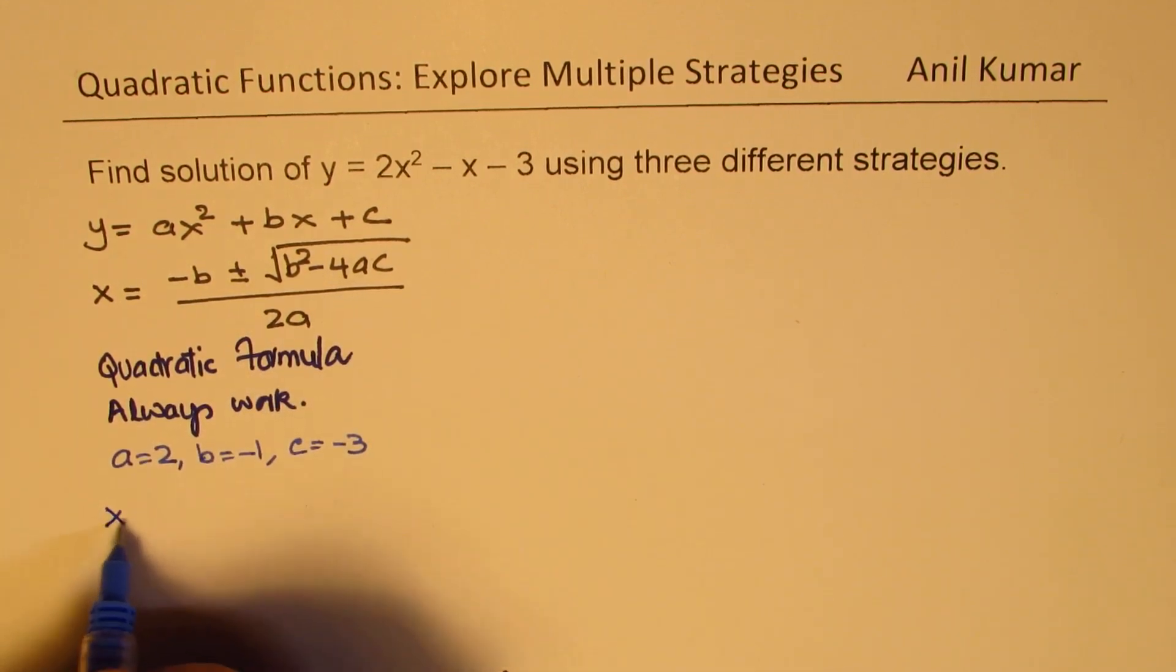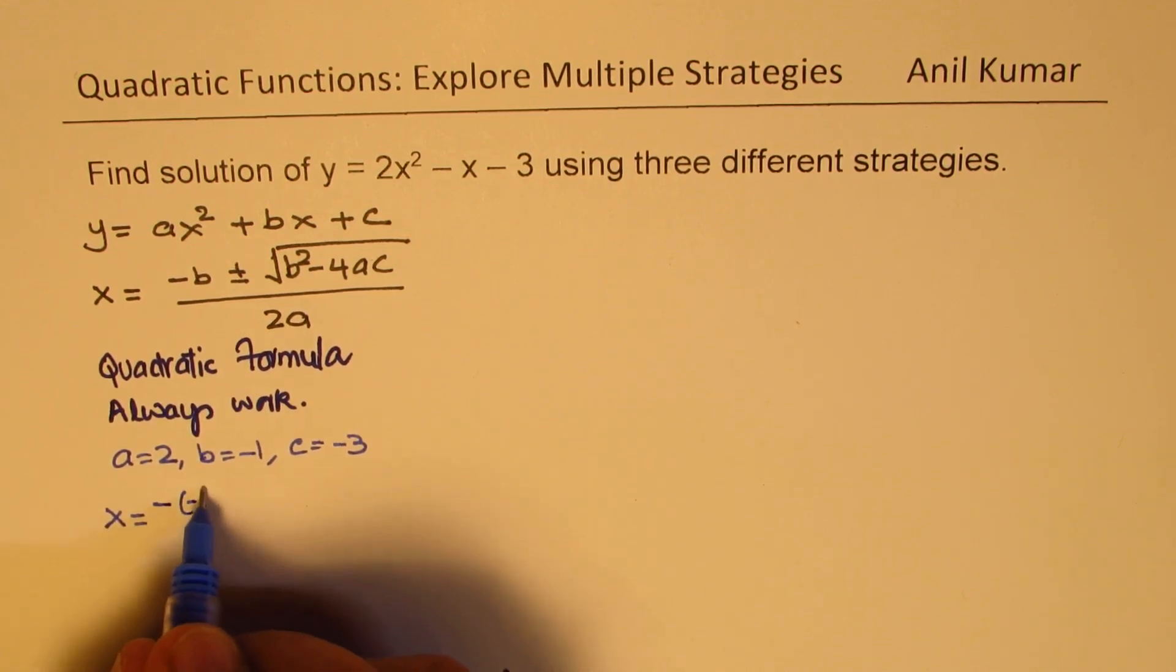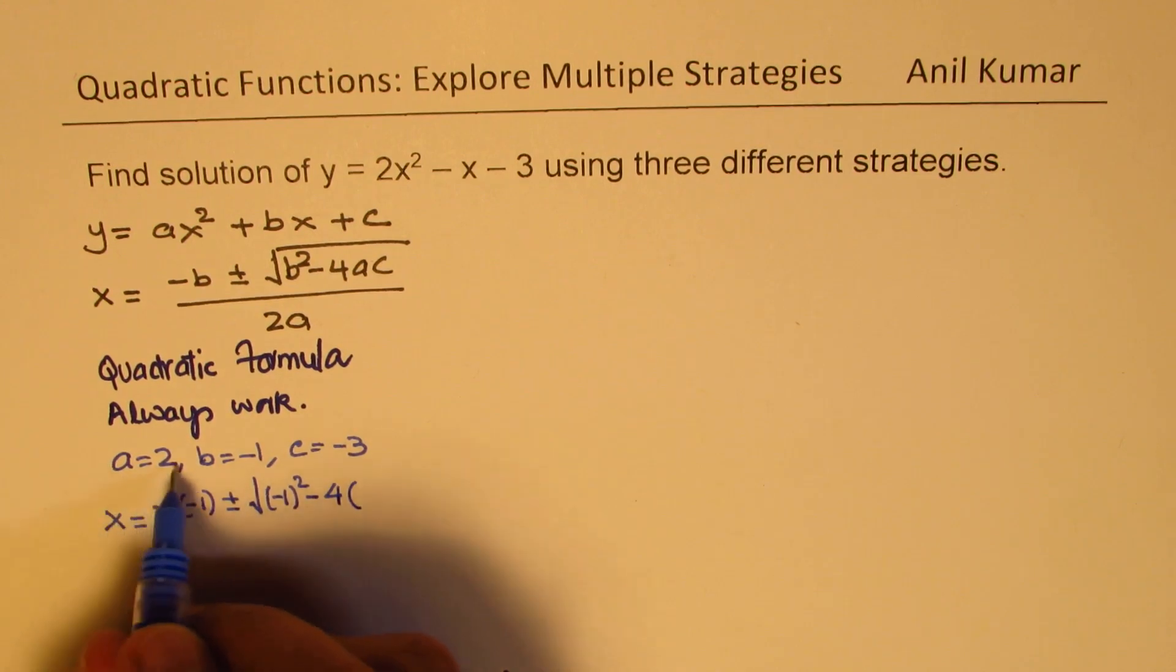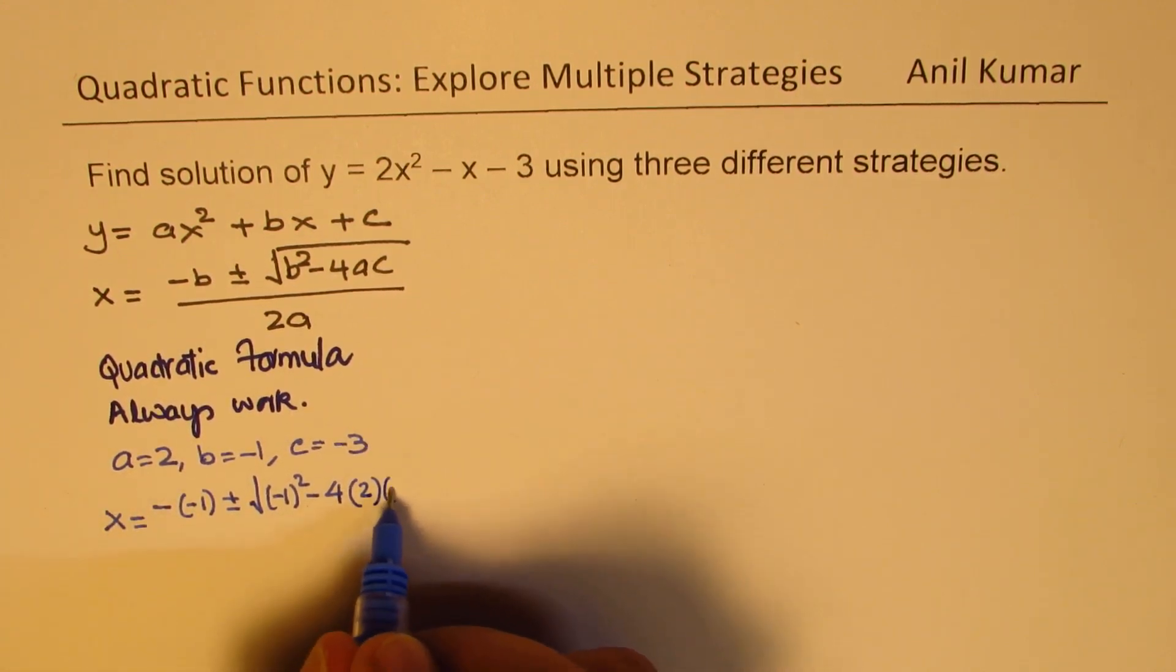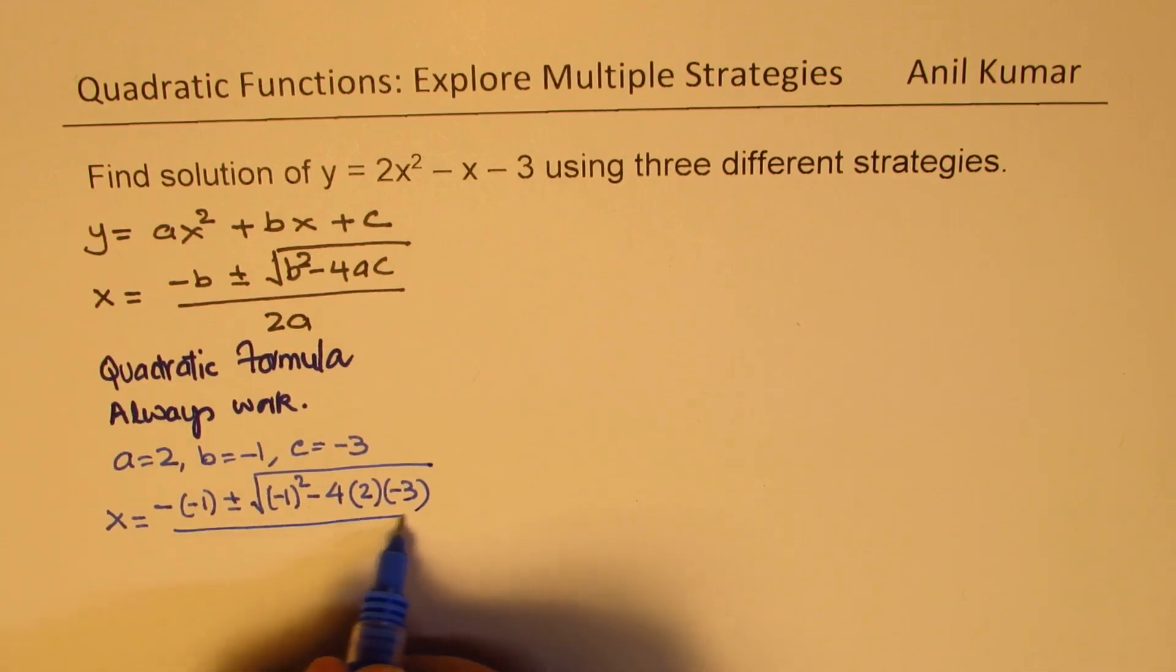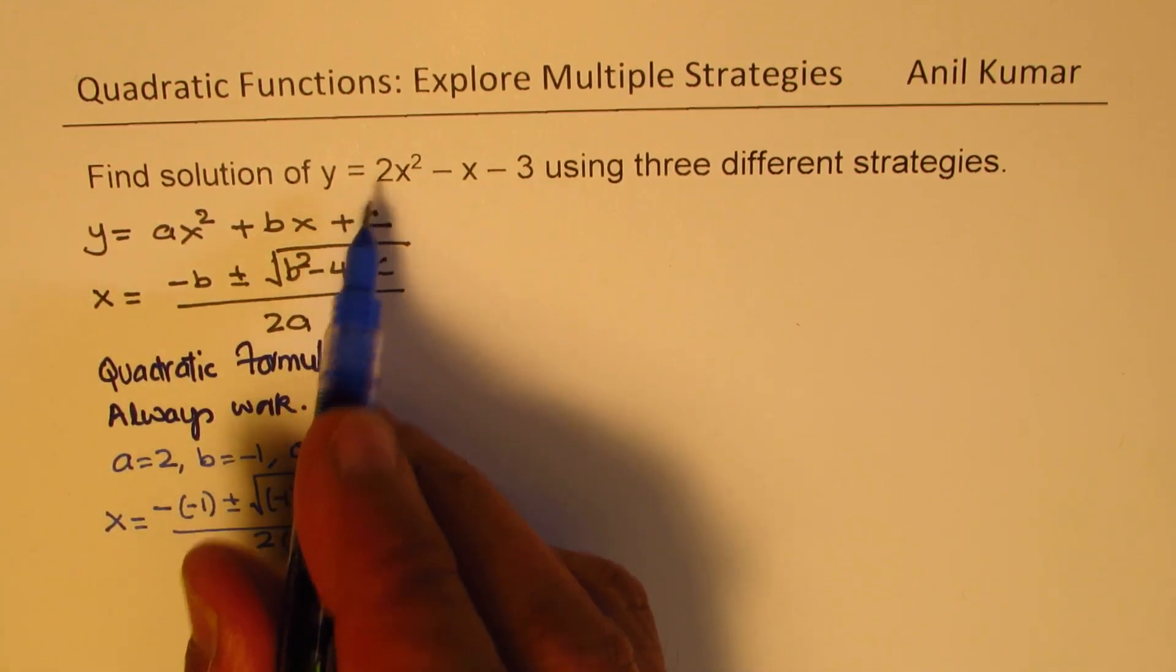Using this formula we can say x equals minus of minus 1 plus or minus square root of minus 1 squared that is b squared minus 4 times a is 2 and c is minus 3, divided by 2 times a which is 2.